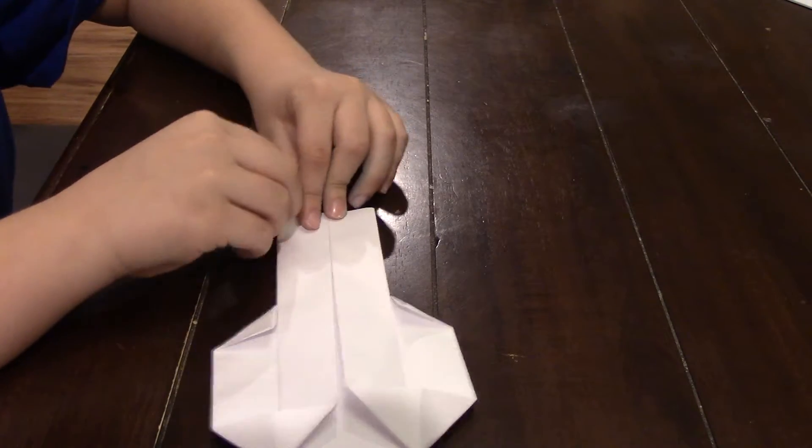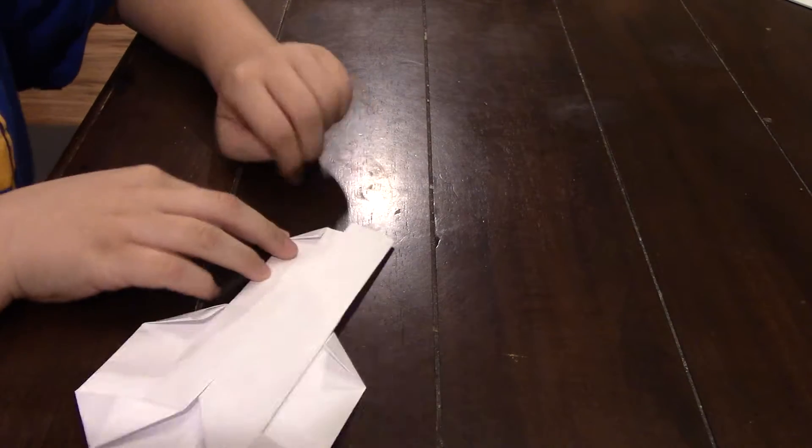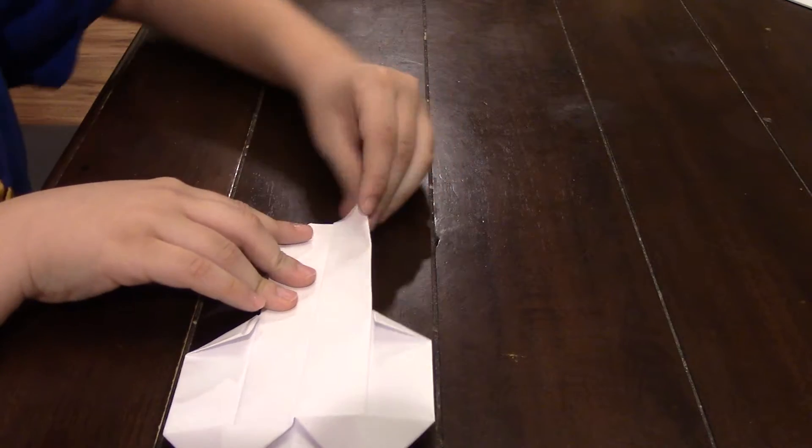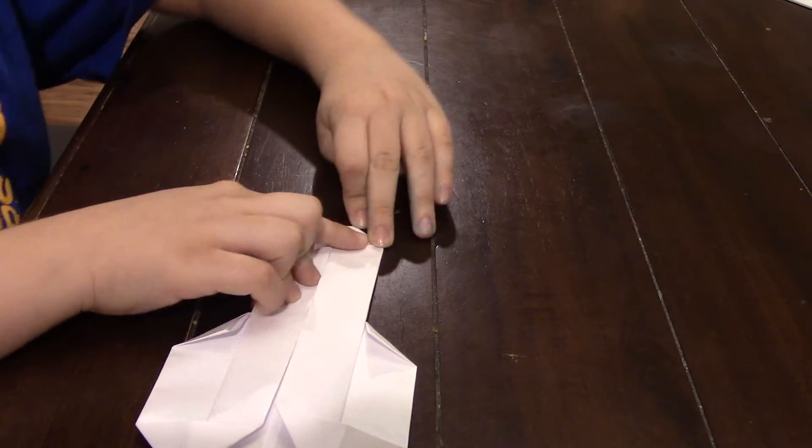And then do the same thing for the head. But don't give him a pointy head, which means don't fold it into the center. Just fold it down like that. Then flip it over.